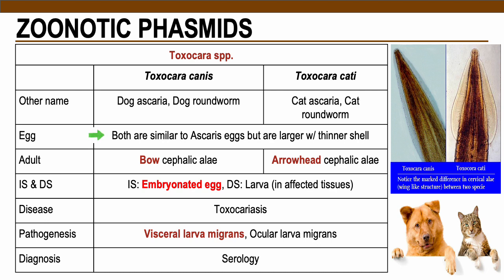In terms of the egg or the ova, both are similar to Ascaris eggs, but are larger and have a thinner shell.